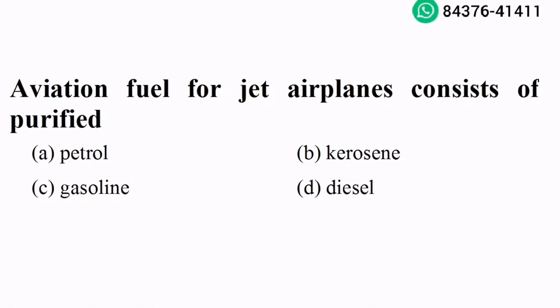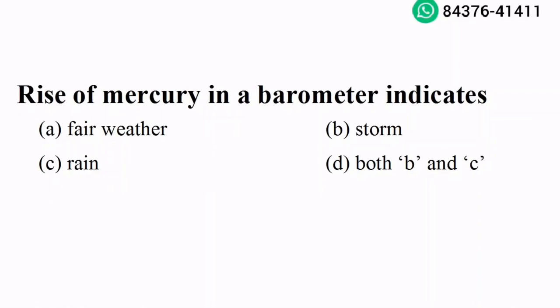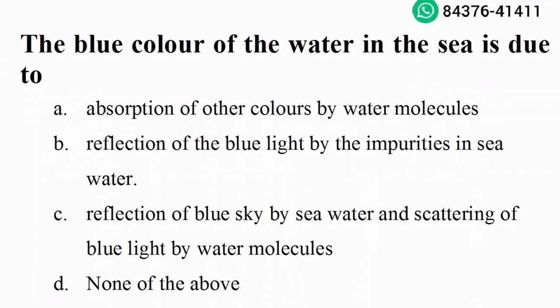Aviation fuel for jet airplanes consists of purified kerosene. Option B is the right answer. Rise of mercury in a barometer indicates fair weather. Option A is the right answer. The blue color of the water in the sea is due to reflection of the blue sky by sea water and scattering of blue light by water molecules. Option C is the right answer.